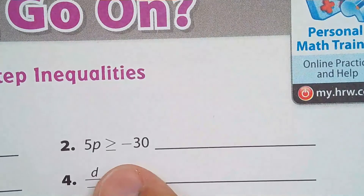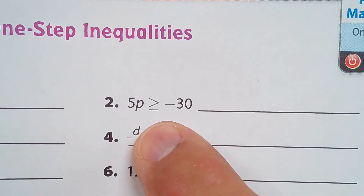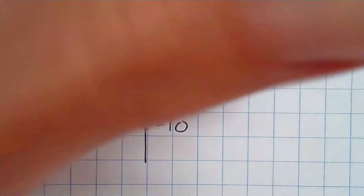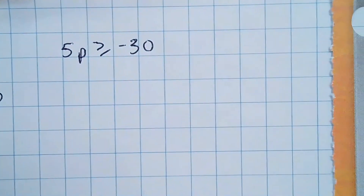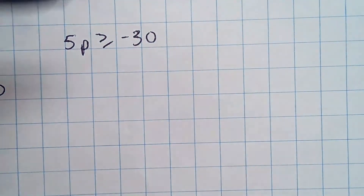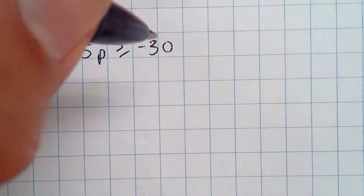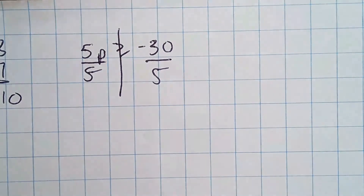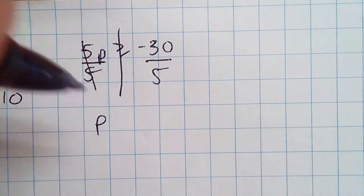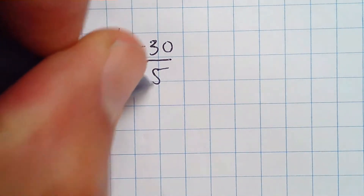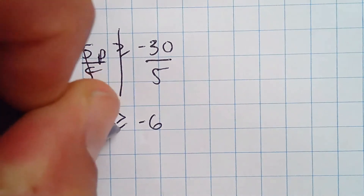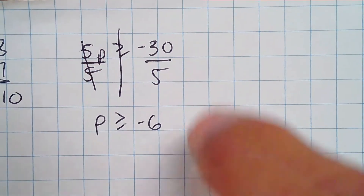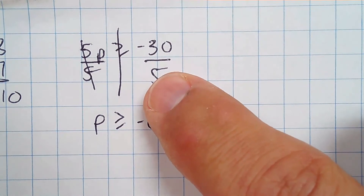Number two is 5p is greater than or equal to negative 30. For this problem, inverse operations: the inverse of multiplying is dividing, so you divide by 5 on each side of the inequality. These cancel, and p is negative 6. You don't switch the inequality because we divided by a positive.